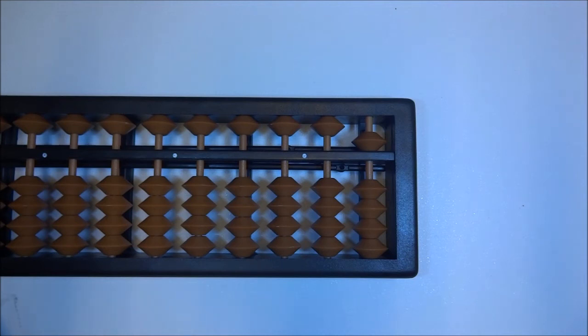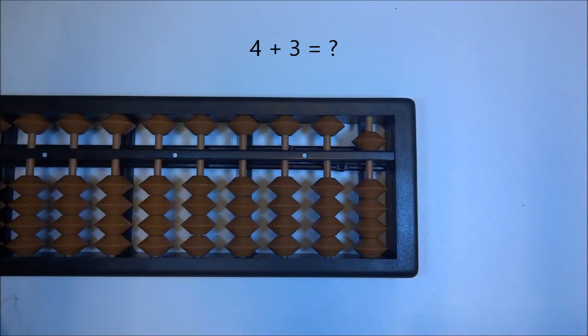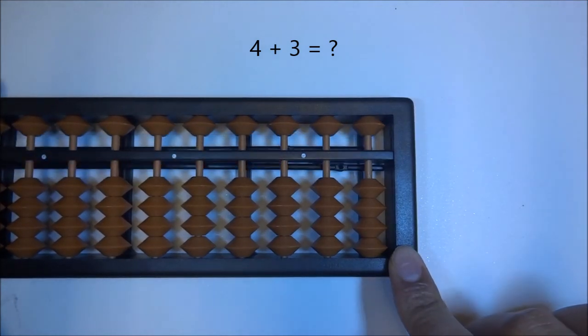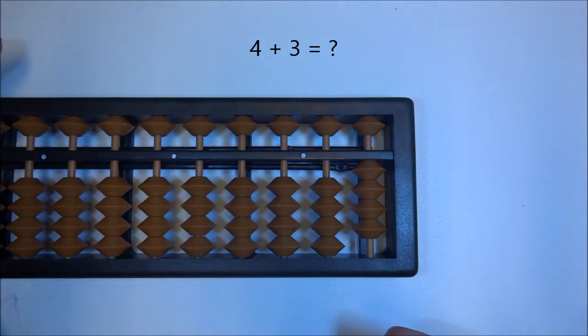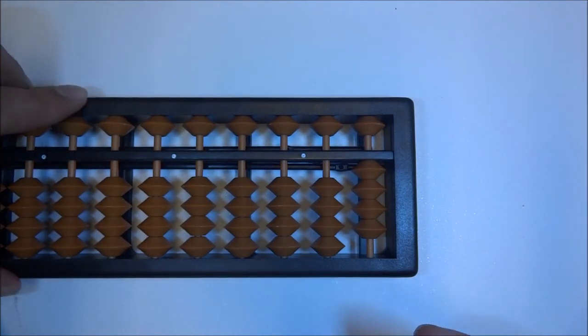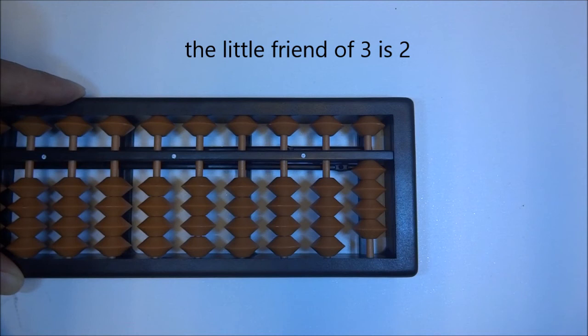Now let's go ahead and try one more. What is 4 plus 3? 4 plus 3. So up 4. Wow, we don't even have a single bead left. 4 plus 3. So what's the little friend of 3? The little friend of 3 is 2. So let's see what it turns out to be.